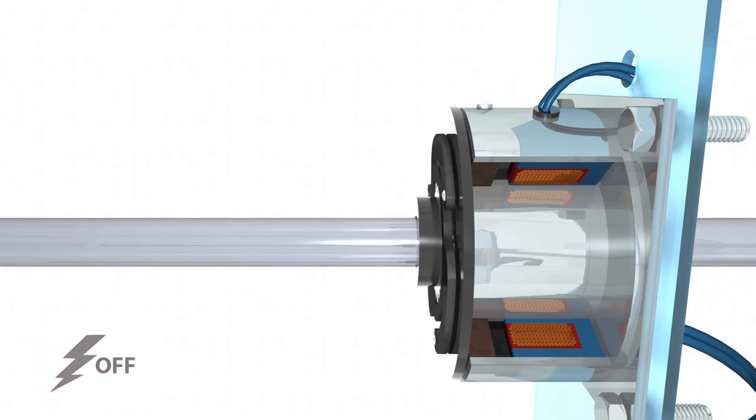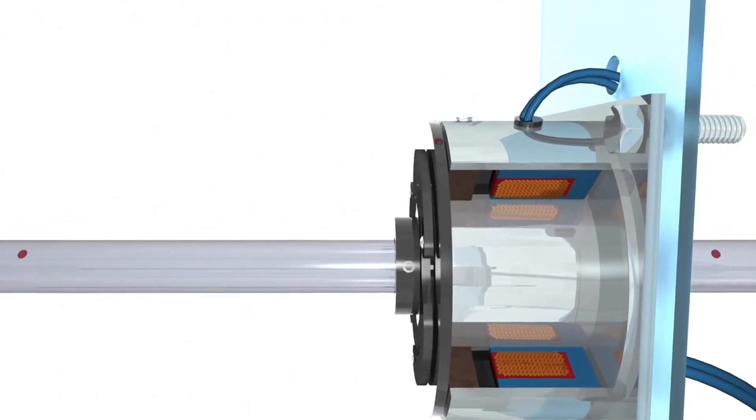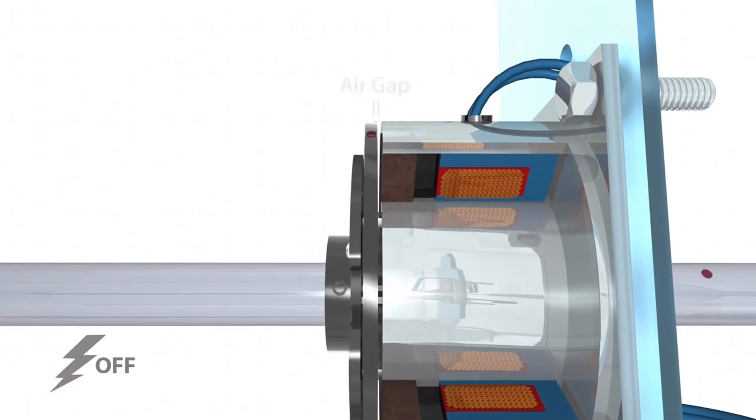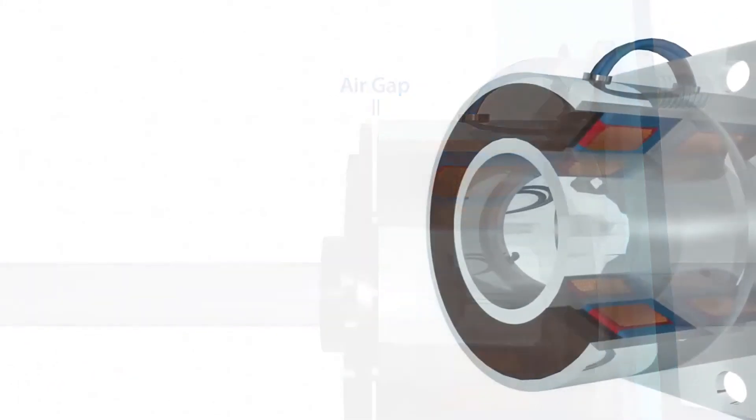When the brake is fully engaged, torque transfer is 100% efficient as there is no relative slip. When current or voltage is removed from the brake, springs hold the armature away from the hub surface creating a small air gap.